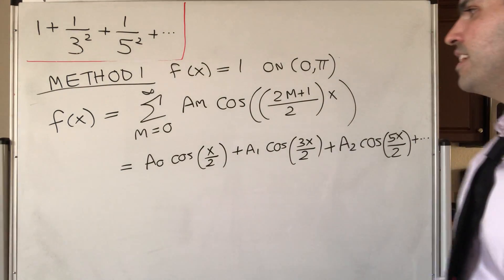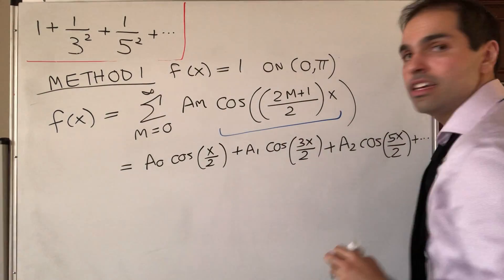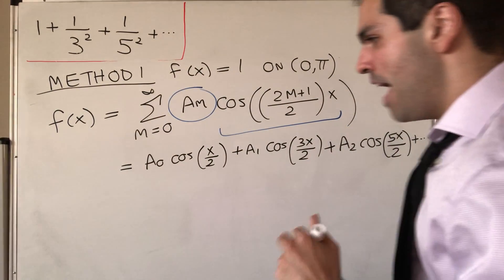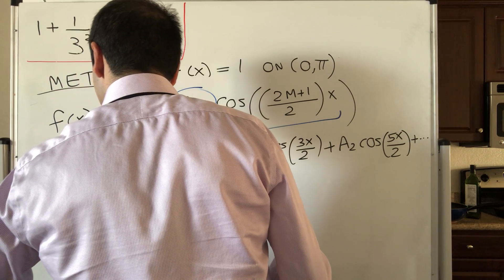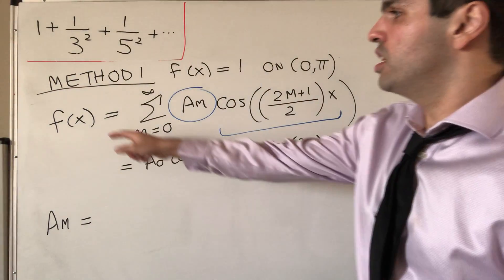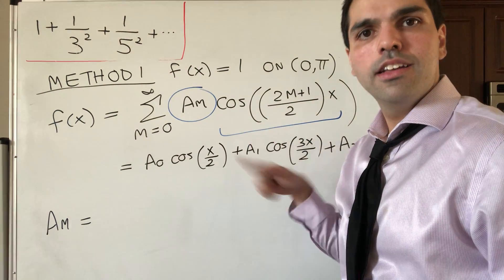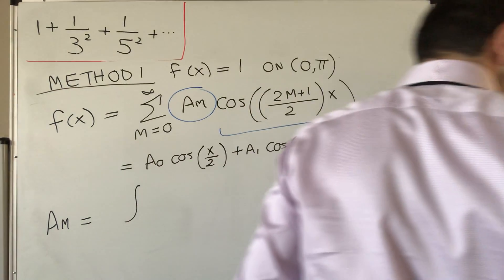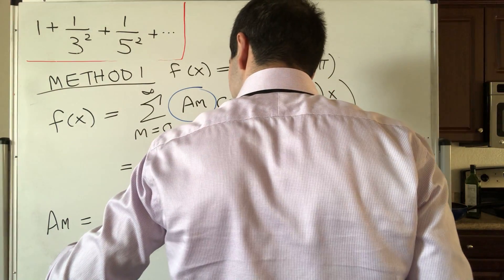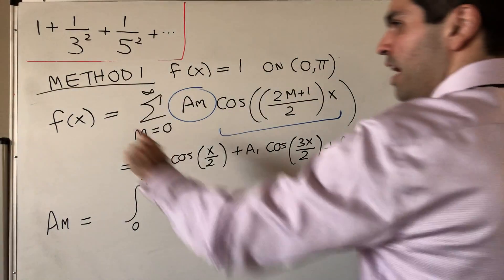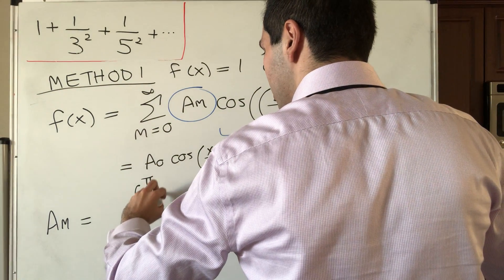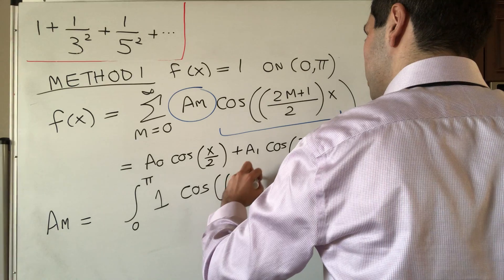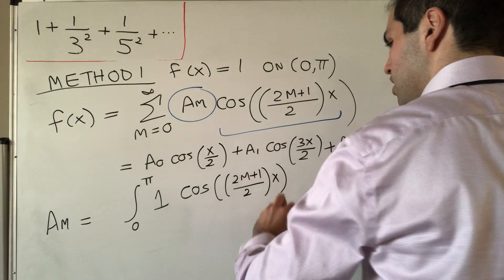The nice thing is all those cosine functions are perpendicular, which means it's very easy to find a_m, because a_m is just given by a dot product. So a_m is f dotted with cosine — and here dot means integral — so it's the integral from 0 to π of f, which is 1, times cosine of (2m+1)/2 · x, dx.